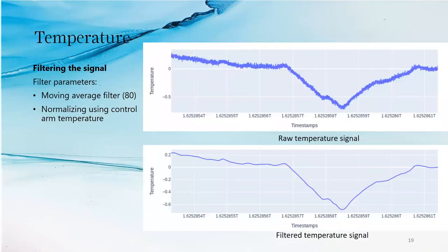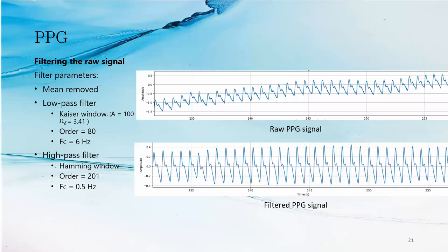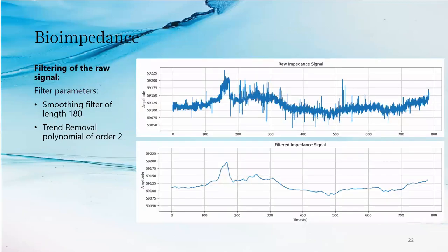Here you can see that the temperature signal that we get from our sensor has some noise. This is not ideal for processing. Therefore, we had to clean and filter it to get a very clear signal. This can also be seen in the PPG, the TPG, as well as the bioimpedance.